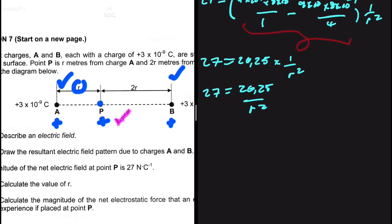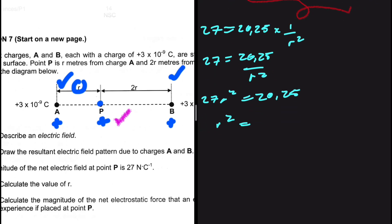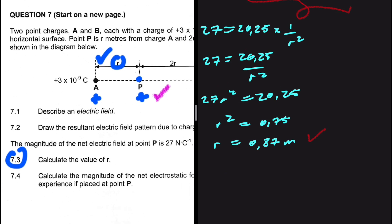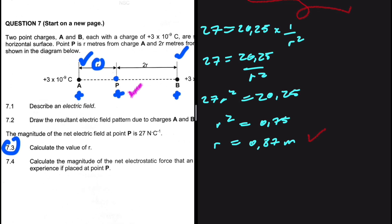Cross-multiplying gives 27r² = 20.25, so r² = 20.25 / 27 = 0.75. Taking the square root of both sides gives r = 0.87 meters. Substituting back into the equation for E_net confirms we get 27, so r is indeed 0.87 meters. Let me know in the comments if you got the same answer.